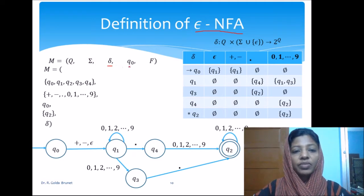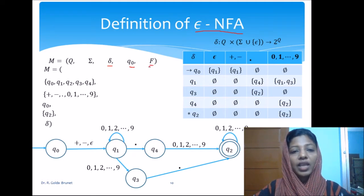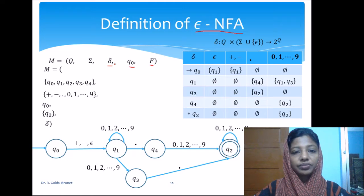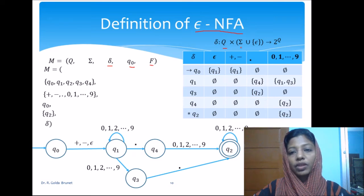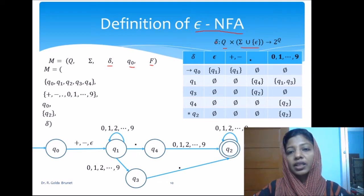delta is the transition and Q0 is the starting state and F is a finite set of accepting state or the final states and the transition function we will define now across Q and sigma union epsilon and remember that epsilon is not a member of sigma and we define the transition for the Cartesian product between the set of states and sigma union epsilon and the range is the power set of Q.